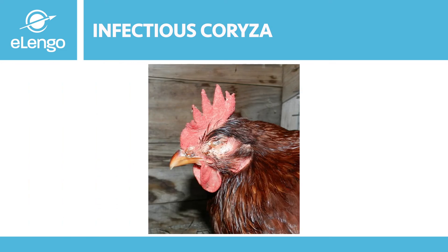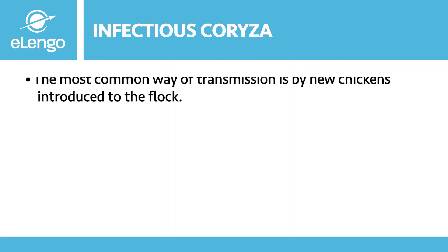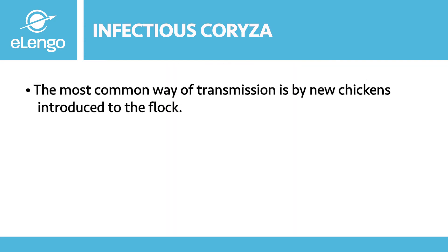The other disease we are going to look at is infectious coryza. Infectious coryza is an acute respiratory disease that is caused by a bacteria. One of the most important things to note is that it has a very short incubation period, which is why it is called acute. It causes inflammation of the upper respiratory tract. The introduction of new chickens into an existing established flock is the most common way birds get infected with infectious coryza.